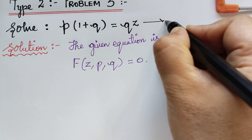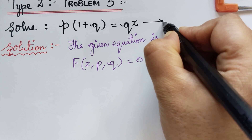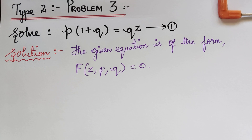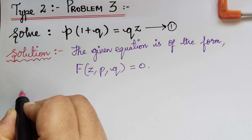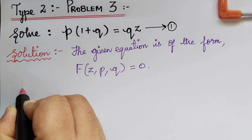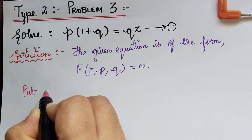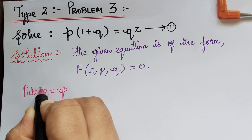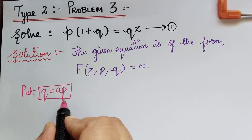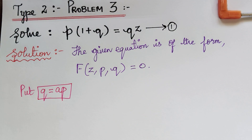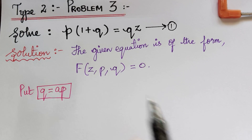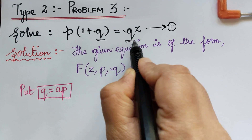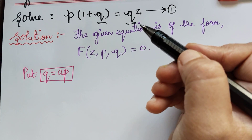Next, we make a substitution by putting q = ap in equation 1. When you put q = ap in equation 1, you have to replace q with ap throughout the equation.